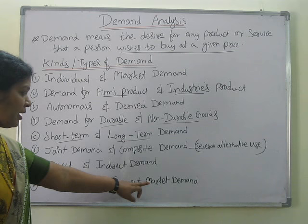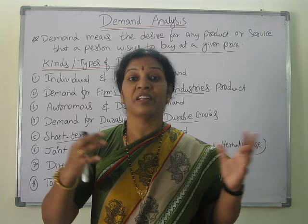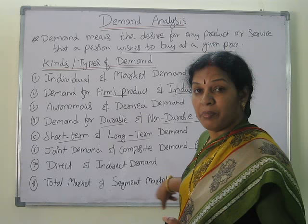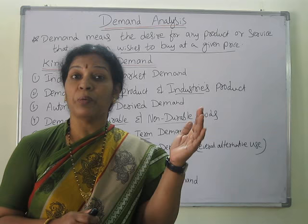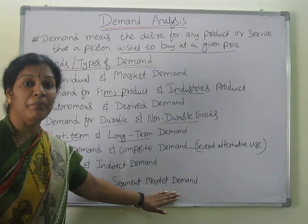The eighth type is total market and segment market demand. Total market demand means for one particular product or service, there is demand across the entire market — for example, education services needed across the entire country. Segment market demand means demand only in a particular area — for example, only in Mumbai, Kolkata, or Chennai. What is the demand for a particular product in that specific area is called segment market demand.